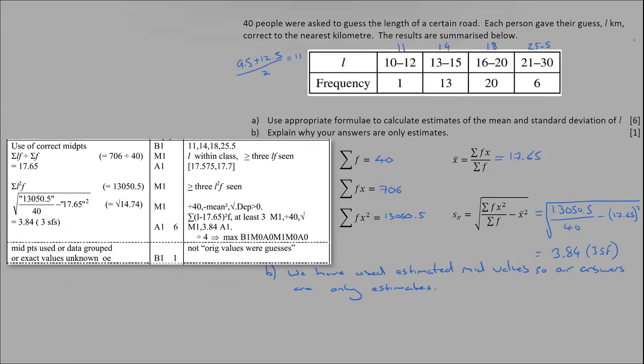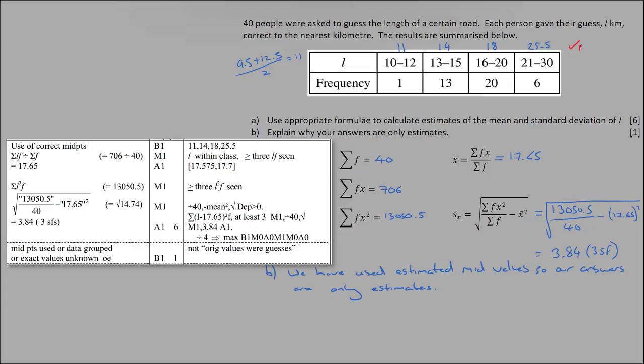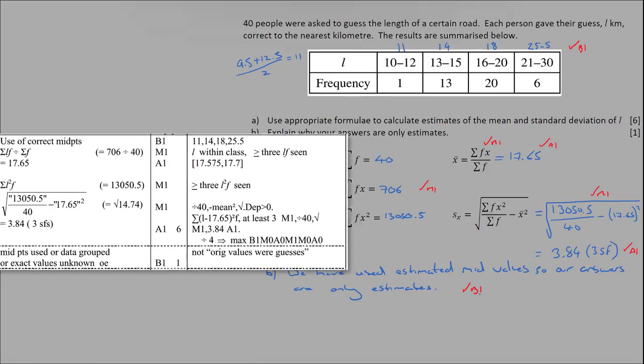Taking a quick look at the mark scheme we get a B1 or independent of method mark for the correct mid values, a method mark and an accuracy mark for finding the mean, an implied method mark for the total, a method mark for the substitution and an accuracy mark for our final answer rounded to an appropriate degree of accuracy. A final B1 mark is for realising that the use of mid values means that these are estimates only.